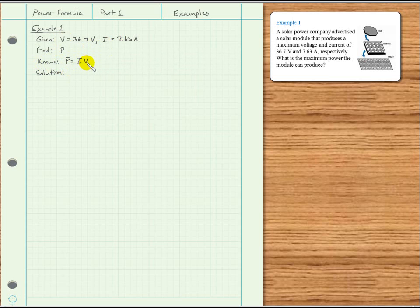Since we know I and we know V, we are able to find P. So we'll write that P equals the current, 7.63 amps, times the voltage, 36.7 volts. When I did that, I got 280 watts. An amp times a volt is a watt, and that's what we were asked to find in this example.